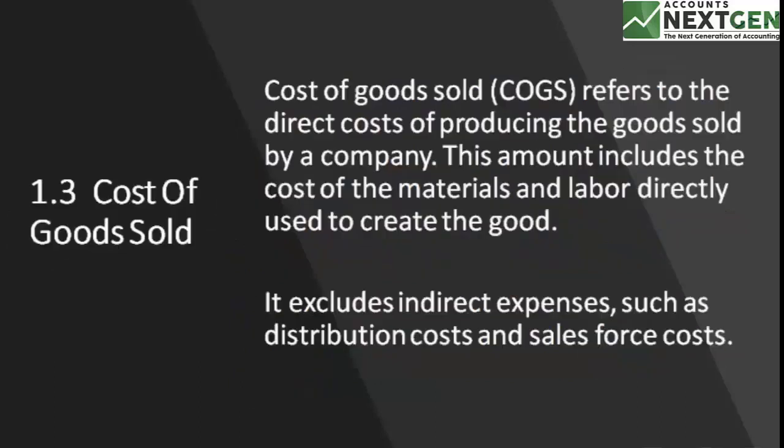When we talk about cost of goods sold, that refers to the direct cost of producing a good sold by the company. The amount includes the cost of material and the labor directly used to create that good — basically the wages we talk about. So it excludes your indirect expenses, like the amount for distributing and the sales force, the on-top expenses.